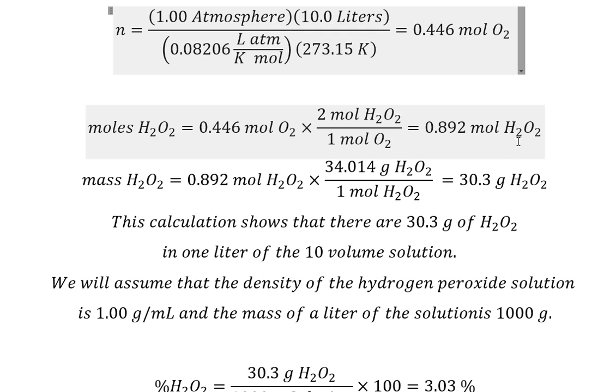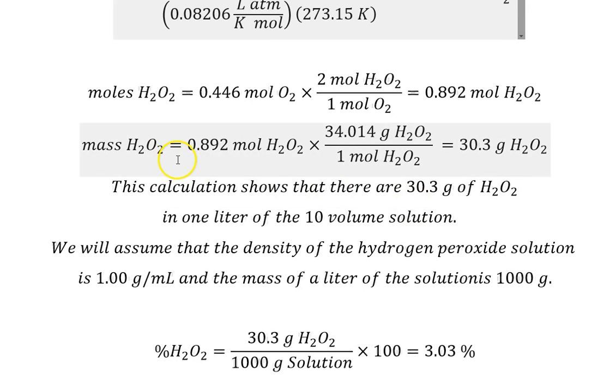You can calculate the molarity, of course. It would be 0.892 moles per liter. Now we want to get the mass. The mass of the hydrogen peroxide would be going from moles to grams. So we multiply by the molar mass to get 30.3 grams of H₂O₂ in that one liter of solution.